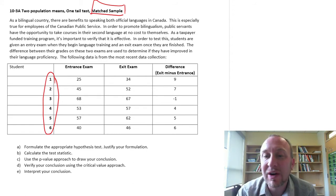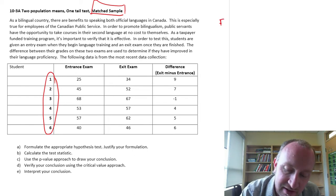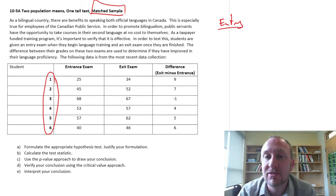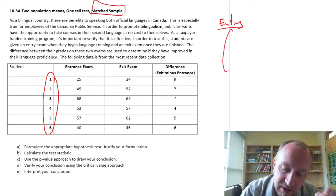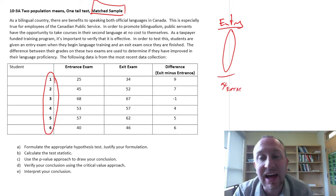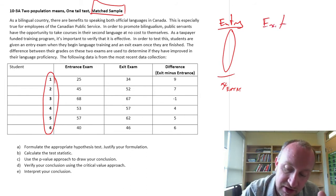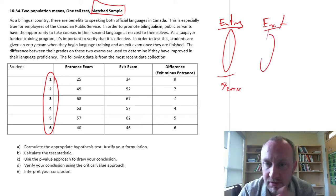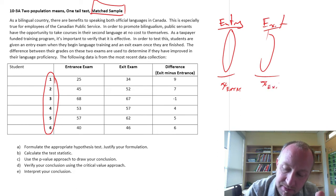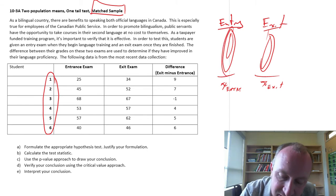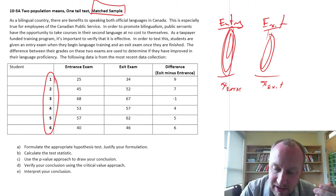So another way that we could have designed this experiment is if this is the entry, we could take 10 students and calculate their average grade as they go into this training program. And then, maybe even that same day or the next day, calculate the average grade of another group of students who have just finished this program and calculate their mean. So these students would be different than these students.